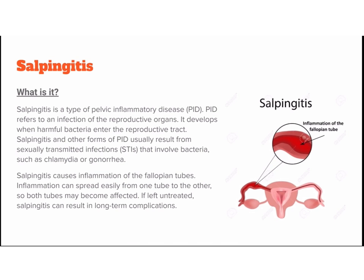Salpingitis is a type of pelvic inflammatory disease (PID). It develops when harmful bacteria enter the reproductive tract. Salpingitis and other forms of PID usually result from STIs involving bacteria such as Chlamydia or Gonorrhea. It causes inflammation of the fallopian tubes, and inflammation can spread easily from one tube to the other, so both tubes may be affected. If left untreated, salpingitis can result in long-term complications.